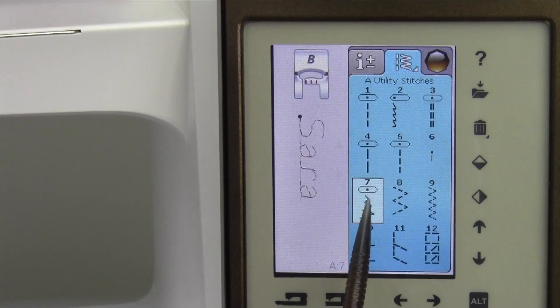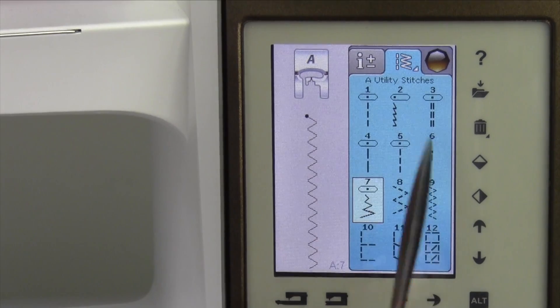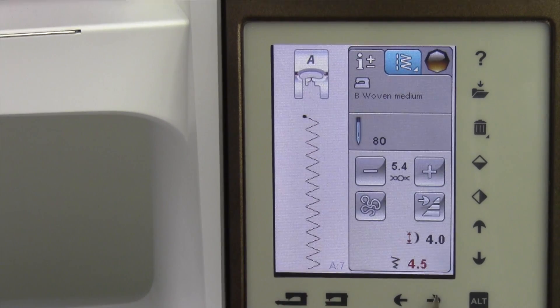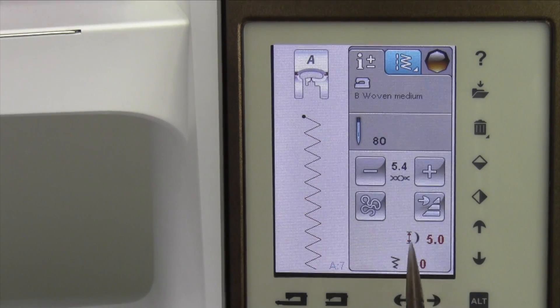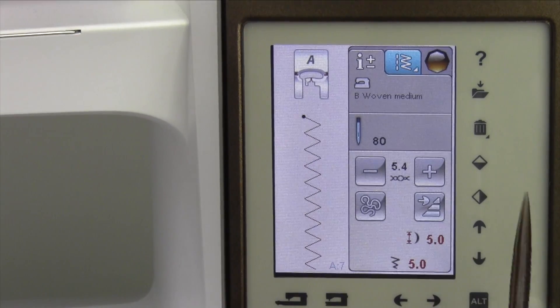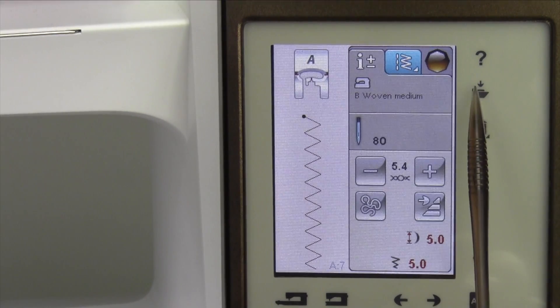For example, let's go ahead and pick a zigzag. Maybe you are always making it a width of, let's make it really big, a width of 5 and a length of 5. That is a setting you use all the time.